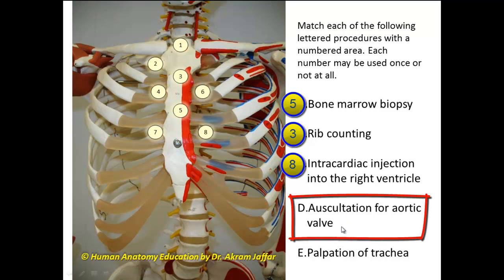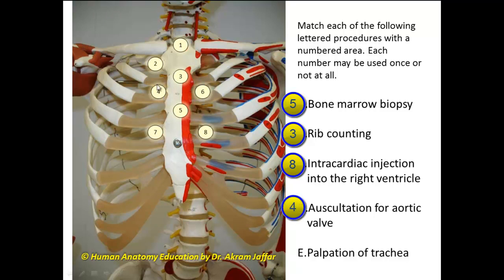Which area is used for auscultation of the aortic valve? This will be in the second right intercostal space — area 4. For the pulmonary valve, we use the left second intercostal space to the side of the sternum, but for the aortic valve, it is the right second intercostal space just to the side of the sternum. Please remember that these auscultatory areas do not match the anatomical positions of the valves. All valves of the heart are located behind the sternum, but these auscultatory areas represent where the sounds of these valves are best heard on the thoracic wall.